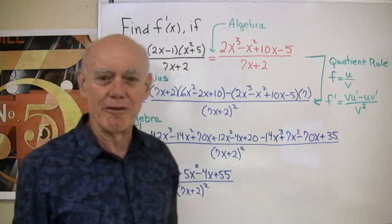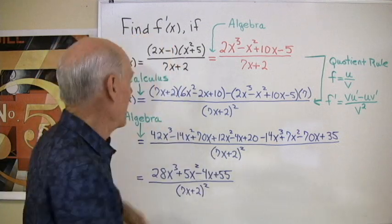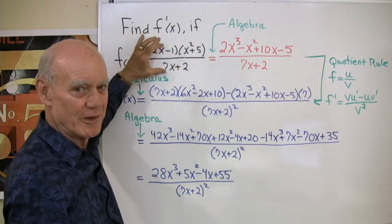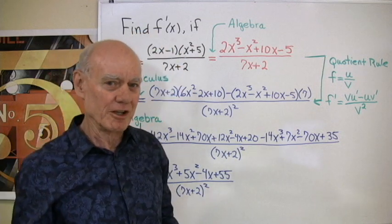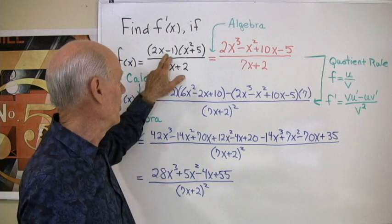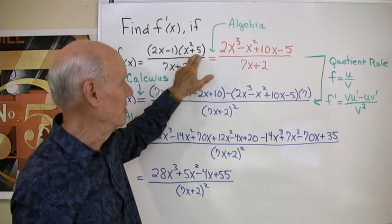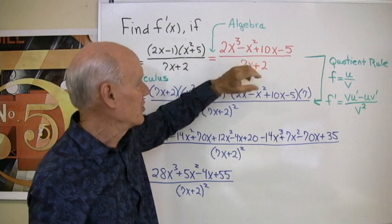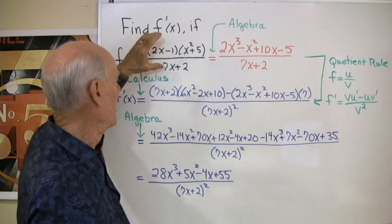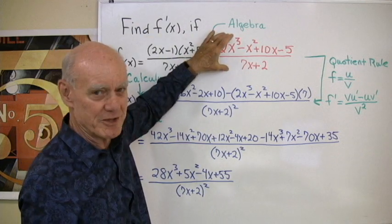This is a problem on finding derivatives and it turns out that it involves two rules in calculus, a product rule and a quotient rule. Now one way to make this problem a little easier to do in the beginning before you apply the calculus is to multiply out these two binomials in the numerator to get this. So applying your calculus to the function in this form rather than this form is sometimes a little easier.